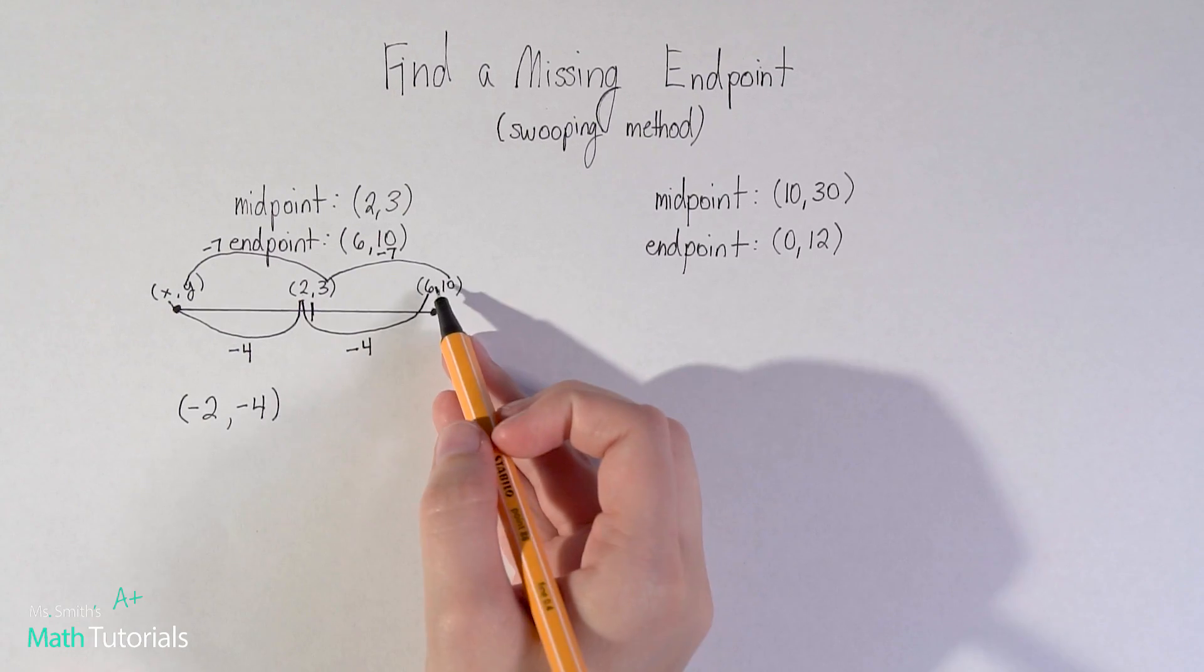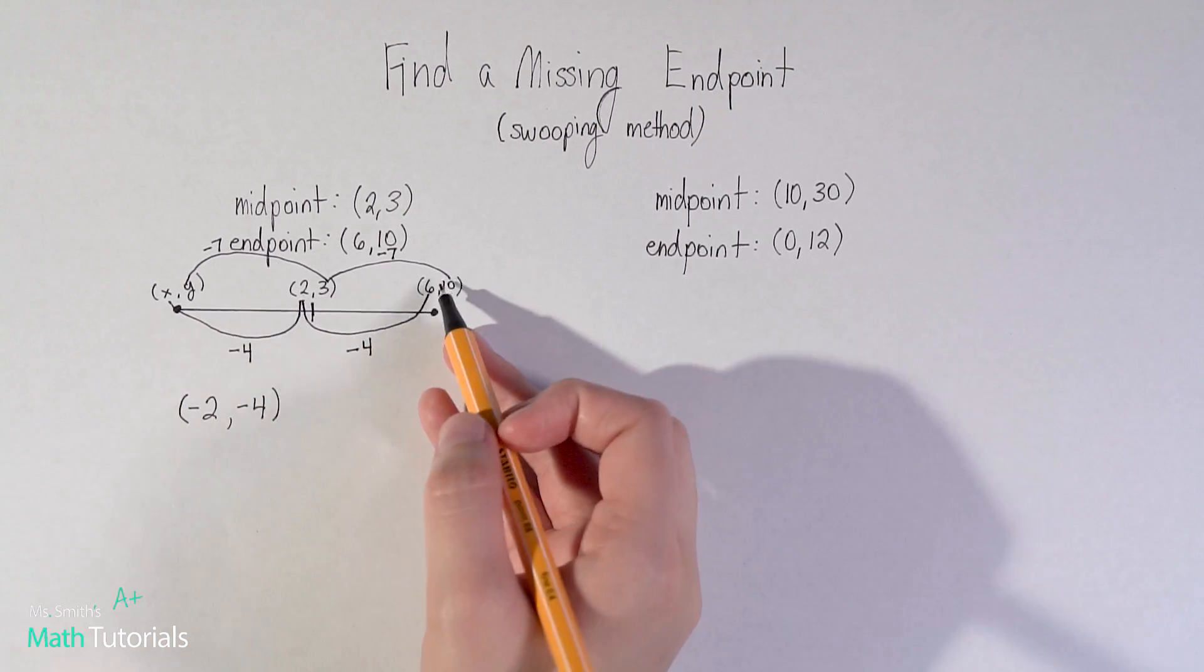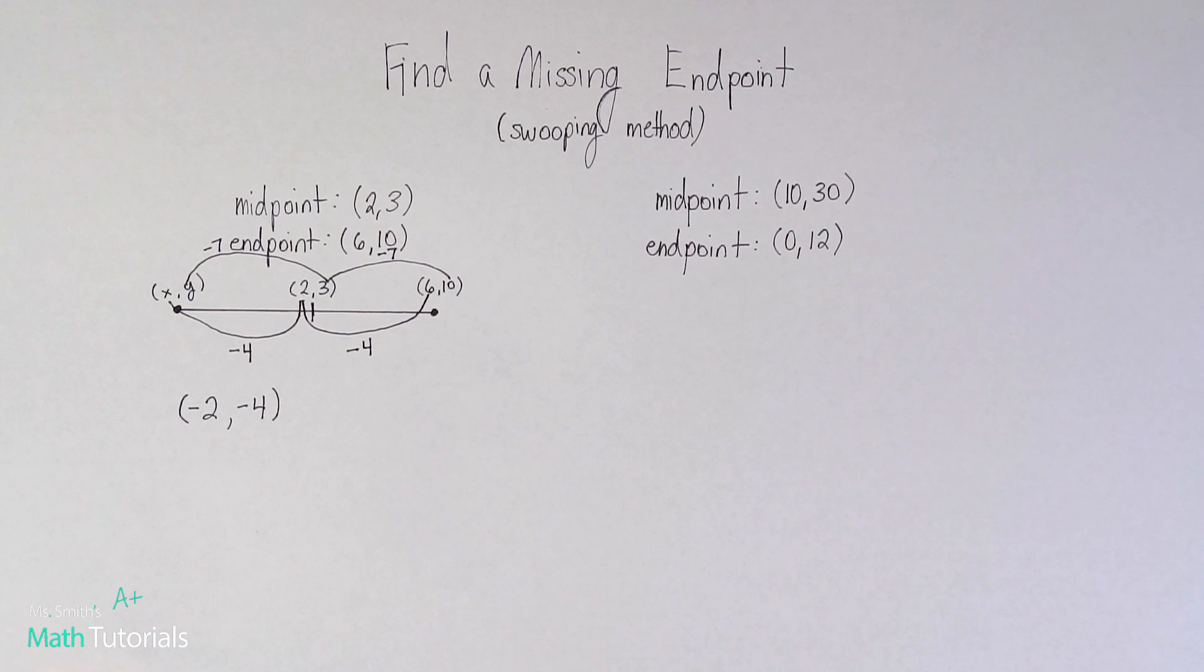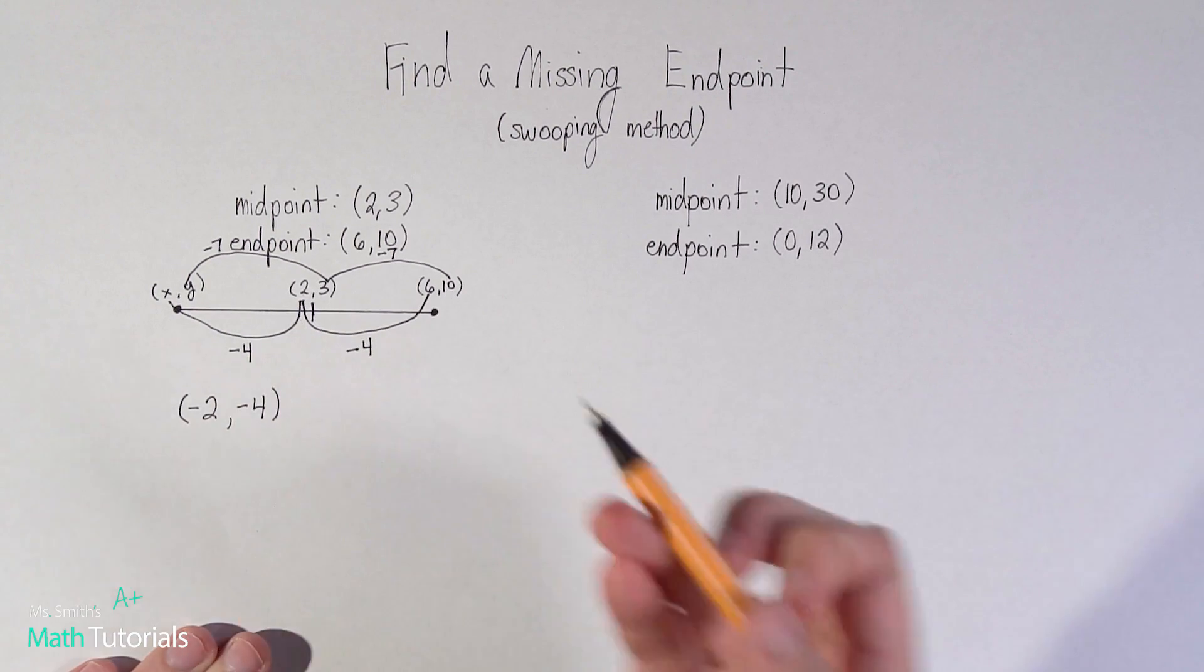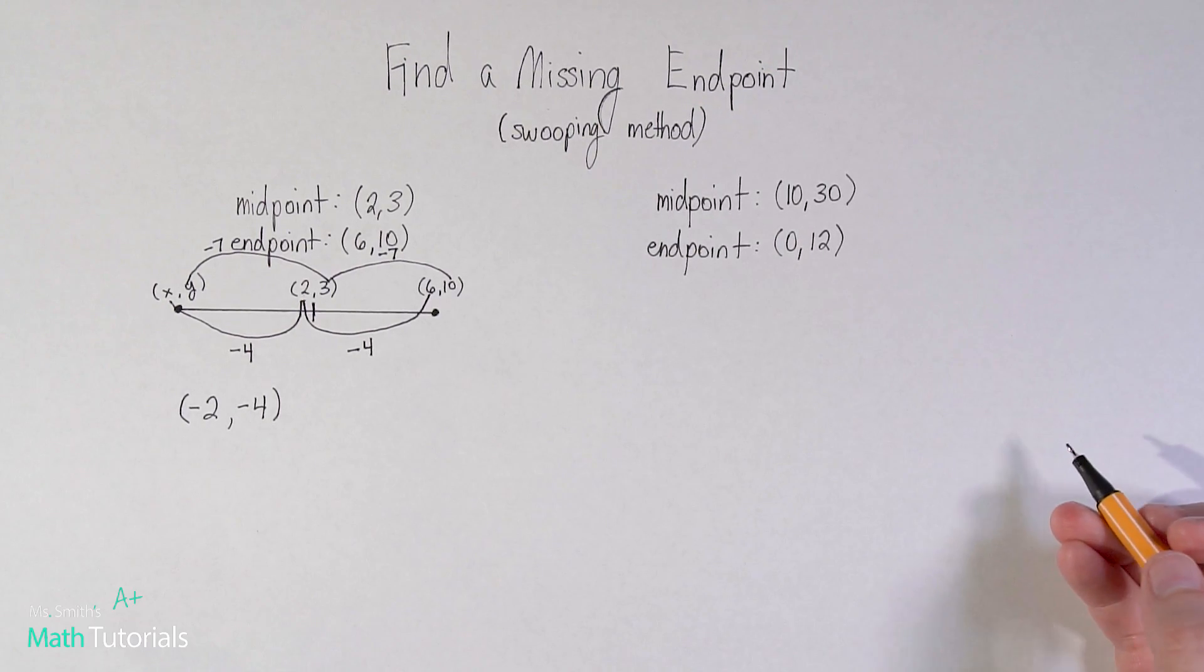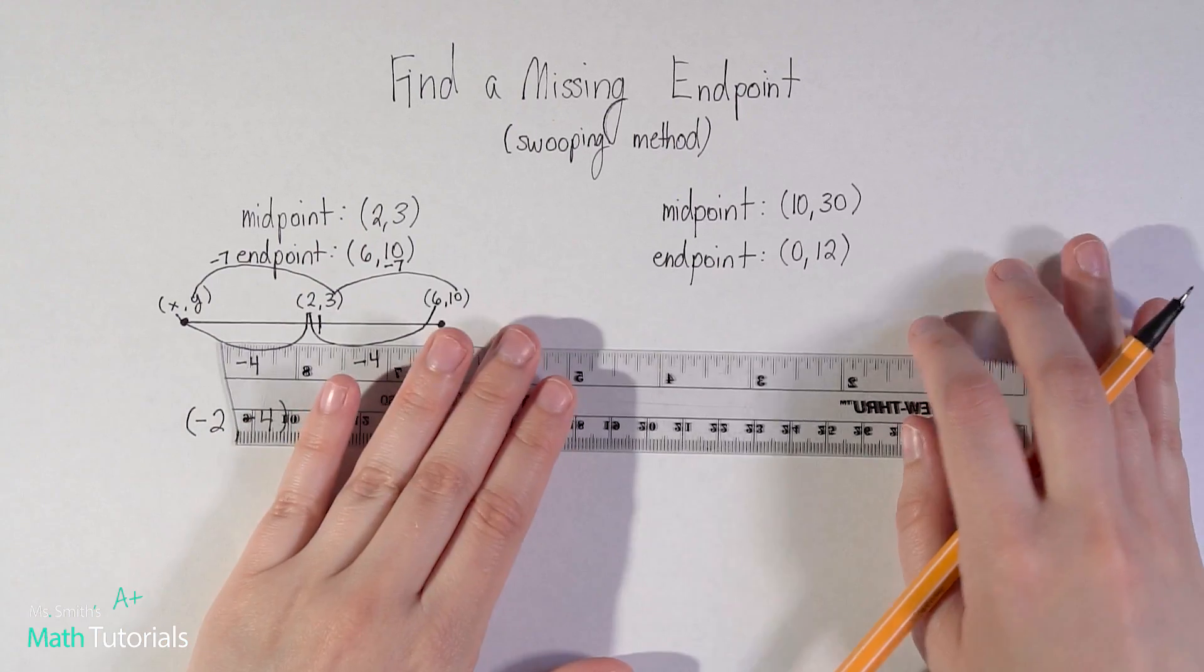That's why this is called the swooping method, because you're just creating that pattern and extending the pattern. Really not a ton of math there, just kind of logically thinking about it. Let's look at another example. I think it helps to really draw it out.